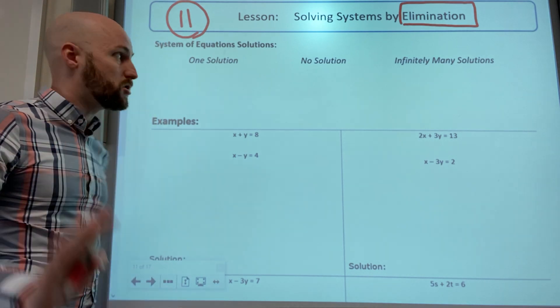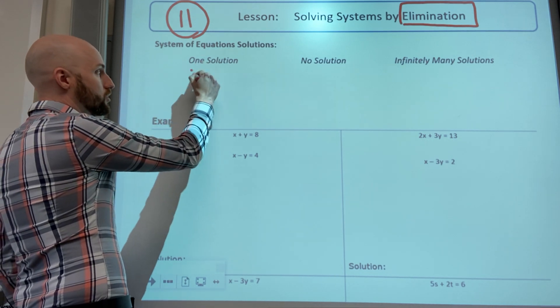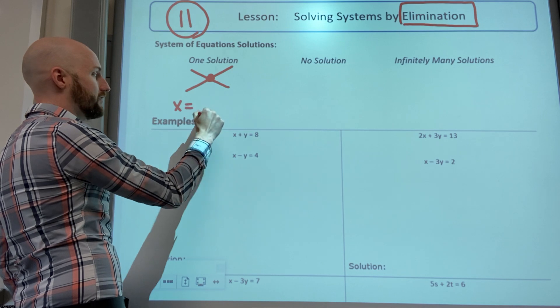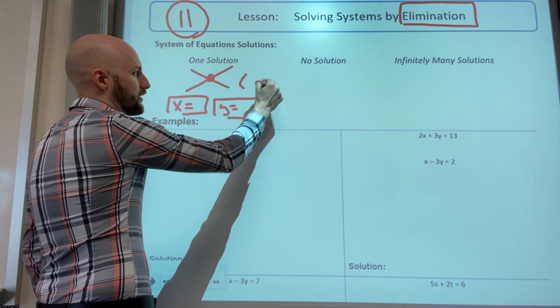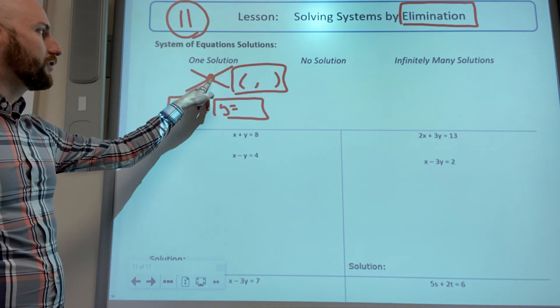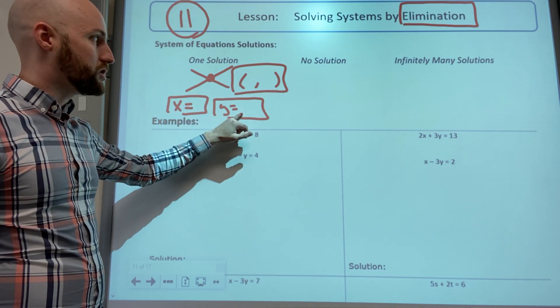Para recordar, one solution is when they cross and we have an answer for x and answer for y, maybe we write like a point. Cuando hay una solución es donde se cruzan en la gráfica y va a haber respuesta para x y también para y y se puede escribir como punto ordenado.